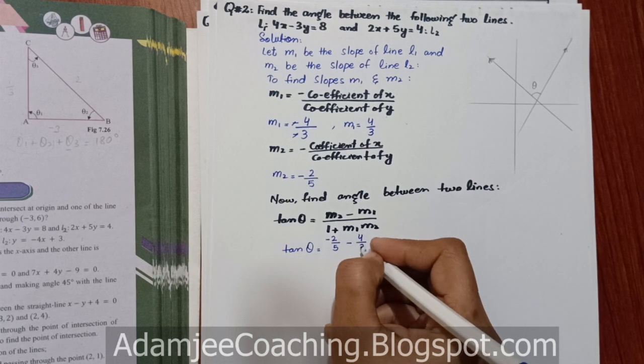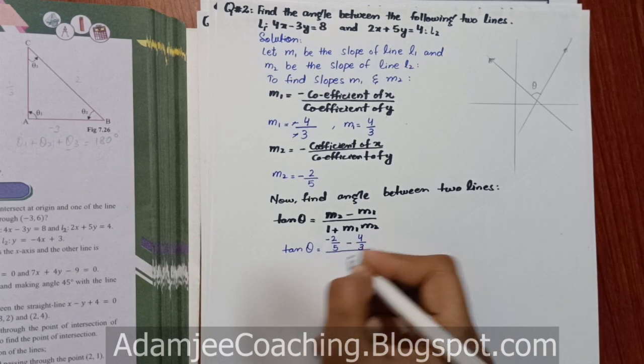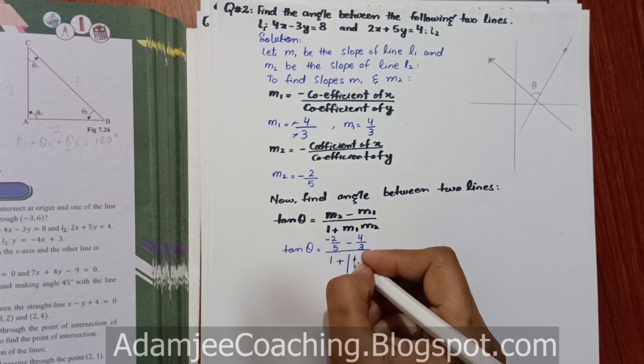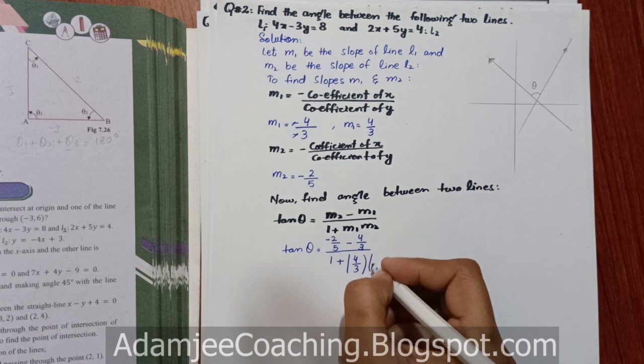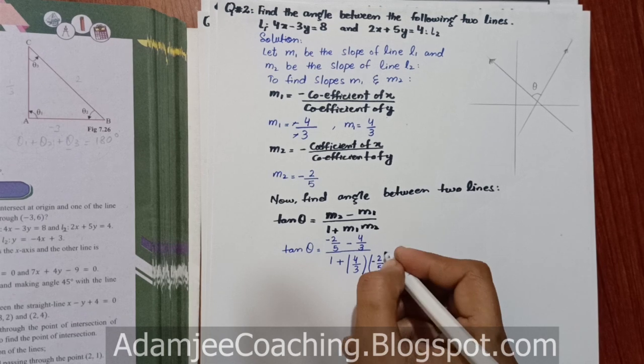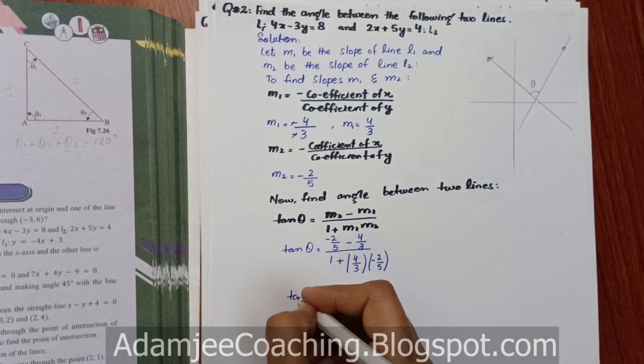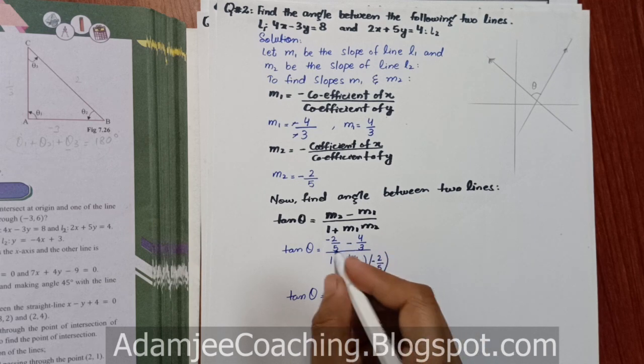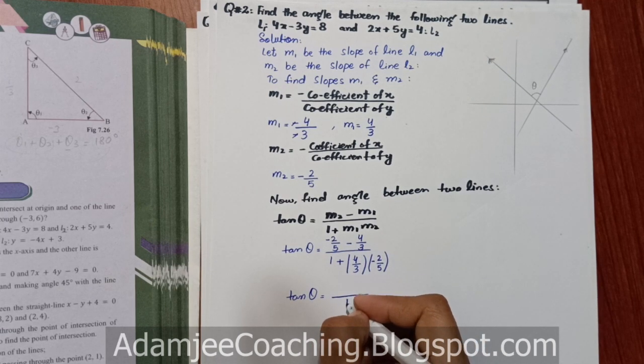Tan theta as it is, M2 ki value hai minus 2 upon 5, minus M1 ki value hai 4 upon 3, divided by 1 plus M1 M2. M1 hai 4 upon 3, M2 hai minus 2 upon 5. Solve karain. Tan theta equals to, in dono ke darmian LCM aa gaya 5 x 3 is 15.